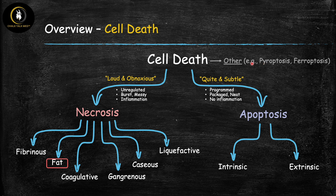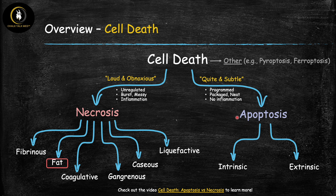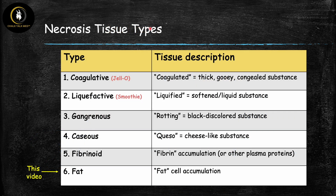Cell death can happen by different mechanisms. The main two are apoptosis and necrosis, and in many ways these are the complete opposite of each other. If you want to learn more about how they differ, check out the linked video. For our purposes, each of these causes cell death by additionally different mechanisms — apoptosis has the intrinsic and extrinsic pathways, and necrosis has six different subtypes, each indicating different morphology of the underlying necrotic tissue.